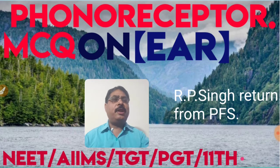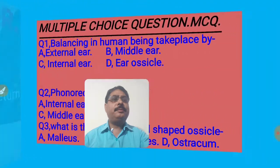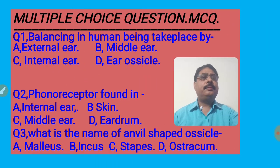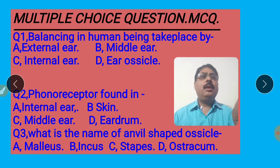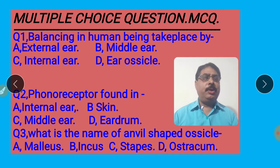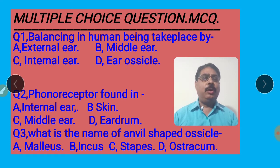Please come to the first slide. Multiple choice questions — MCQ. I shall make three videos on the phonoreceptor as ear. The first video is the anatomy of the ear. The second video is the mechanism of the ear. The third video is the mechanism of equilibrium. The fourth video depends on MCQs of the phonoreceptor. First question start.